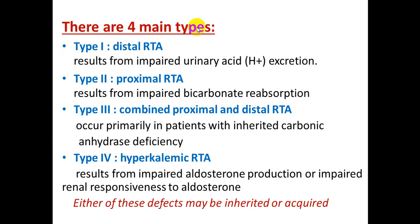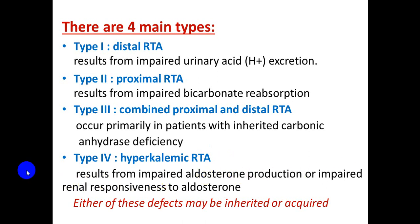There are four main types of renal tubular acidosis. Type 1 is distal RTA, resulting from impaired urinary acid excretion. Type 2 is proximal RTA, resulting from impaired bicarbonate reabsorption. Type 3 is combined proximal and distal RTA, resulting from inherited carbonic anhydrase deficiency. Type 4 is hyperkalemic RTA, resulting from impaired aldosterone production or impaired renal responsiveness to aldosterone.